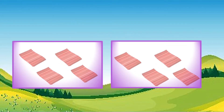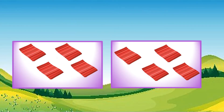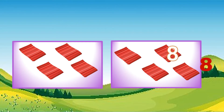Two sets of four. Skip counting: four, eight. Two times four equals eight.